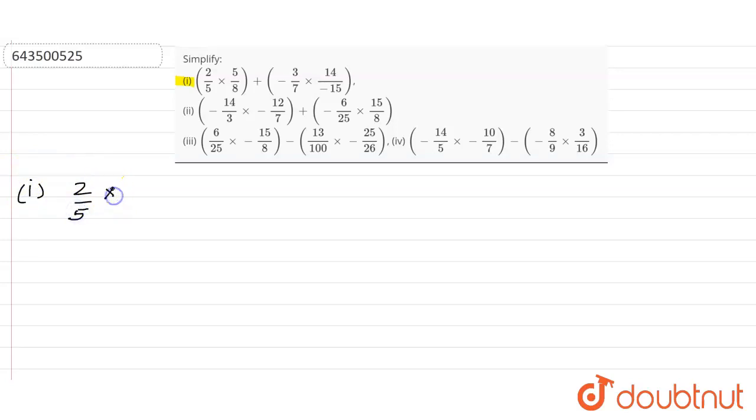So here they gave us two by five multiplied with five by eight, and all these things in one bracket, which is added to minus three by seven into 14 by minus 15.